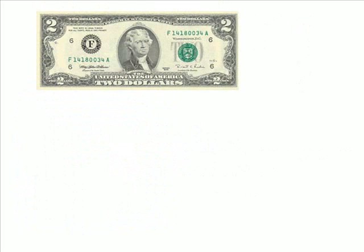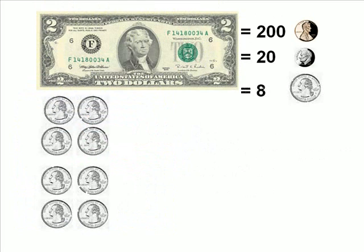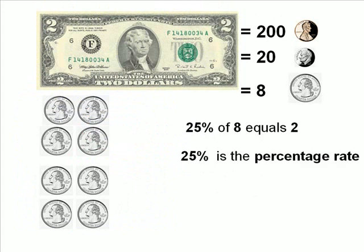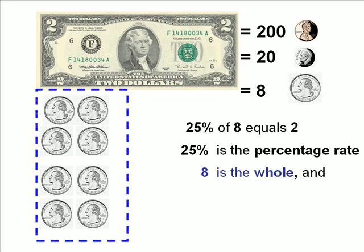Let's look at another example: a two-dollar bill, which is equivalent to 200 pennies, 20 dimes, or eight quarters. So 25% of eight equals two. 25% is again the percentage rate, eight is the whole, and two is the part.